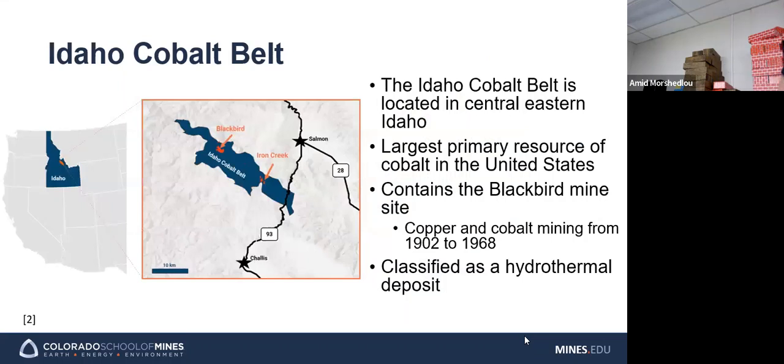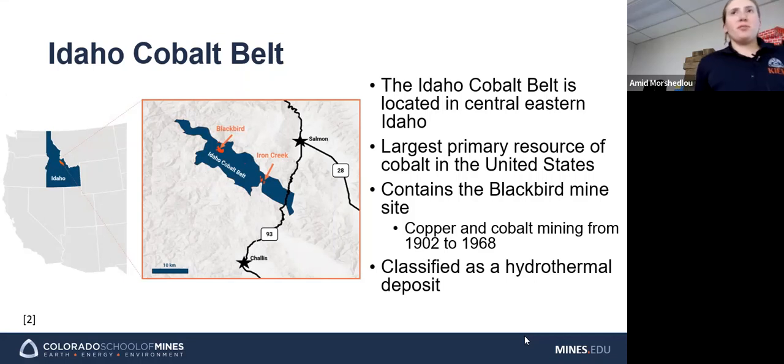So the Idaho cobalt belt is located in central eastern Idaho. It's the US's largest primary source of cobalt. There's been several mines in the past in this area, though none currently active right now, the largest of which was the Blackbird mine site, which was a copper cobalt mine that ran from 1902 to 1968. And this area is generally classified as a hydrothermal deposit.